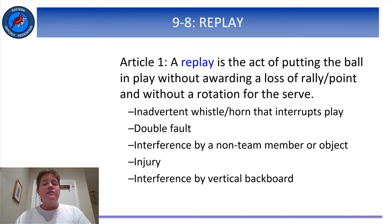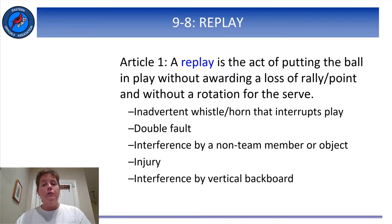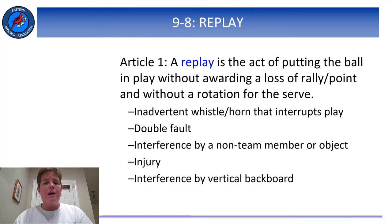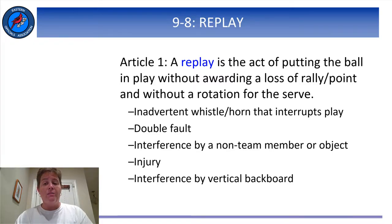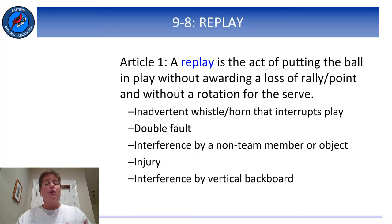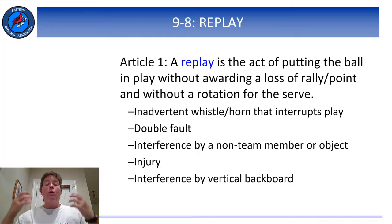Rule 9-8 defines the term replay and then lists nine reasons that a replay can be declared. Remember that in most instances there is room for referee judgment about whether a replay should be awarded. For example, if a ball hits a vertical backboard, the referee must decide whether the backboard truly interfered with a player's legitimate play on the ball. If the ball would have continued out of play had the backboard not been there, the judgment should be that the ball is out rather than giving the team a replay. If a horn goes off but everybody plays on as normal, there is no reason to stop play and declare a replay. If a team complains after losing the point that the horn went off, the referee can reply that in their judgment the horn did not affect play.